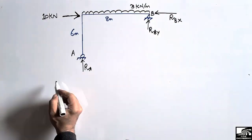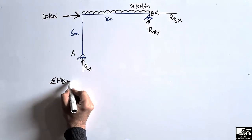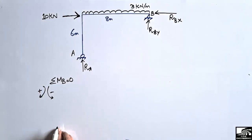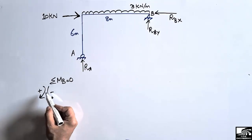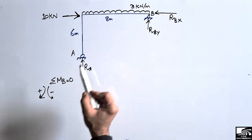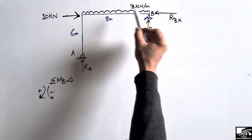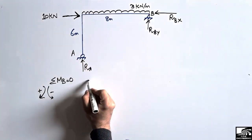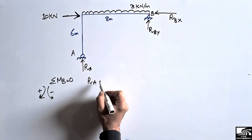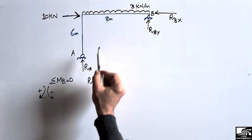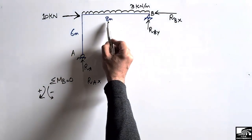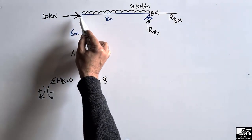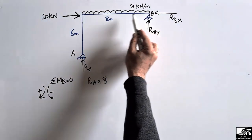Now we have to find RA, RBY, and RBX. Let's take the summation of moments at point B equal to zero. The sign convention: clockwise moment is positive, anti-clockwise is negative. RA creates a clockwise moment about point B, so it is positive: RA multiplied by its moment arm of 8 meters. The 10 kN horizontal force creates no moment because it passes through point B, so there is no moment for this load.